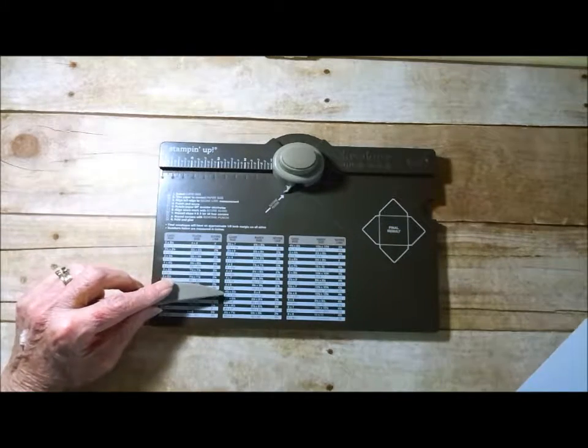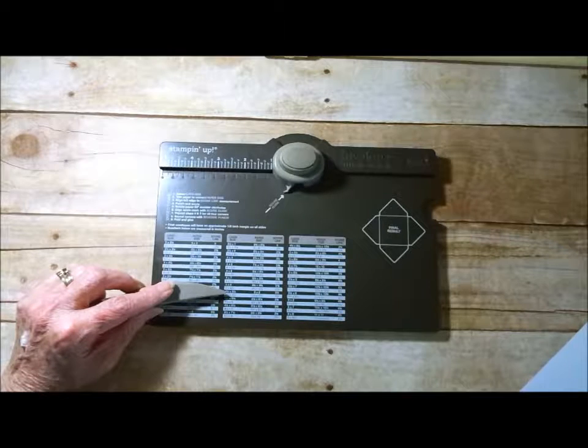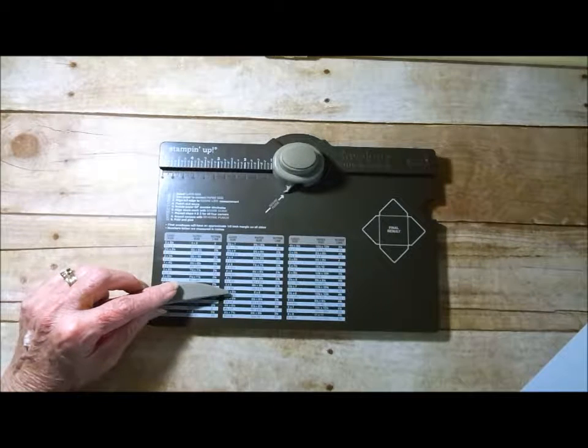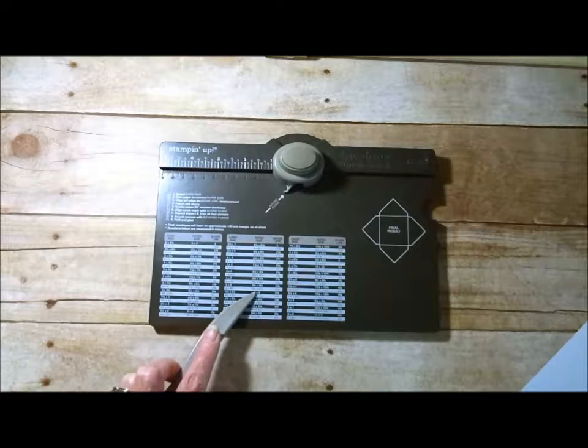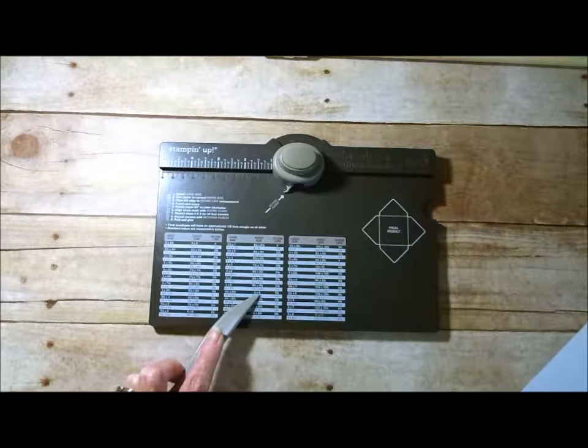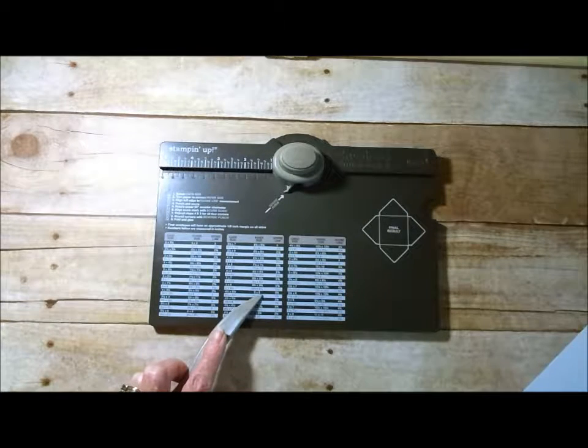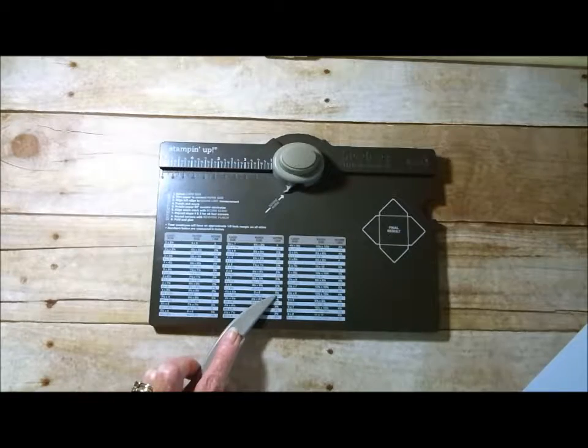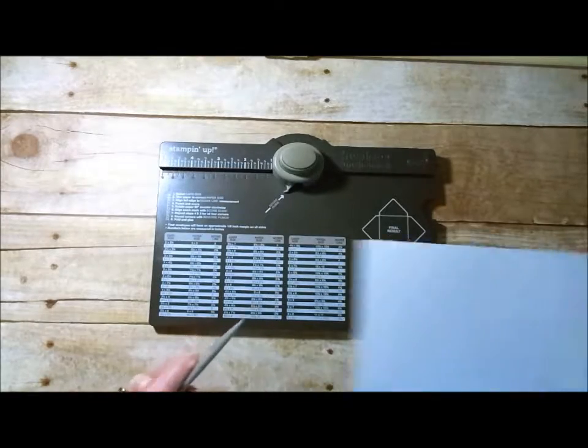So today we're going to make one for an A2 card which is 4 1/4 by 5 1/2. It says we're going to need an 8 inch by 8 inch piece of paper and we're going to start our first score at 3 and a half.